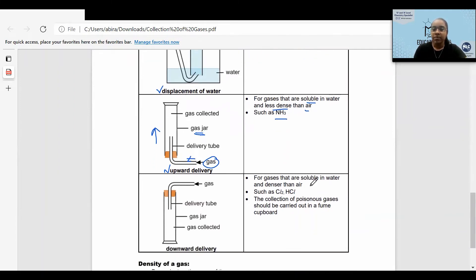But what happens when your gases are soluble in water? Some examples include chlorine and hydrogen chloride. The method that we use is downward delivery. For downward delivery, it is actually the opposite of upward delivery.